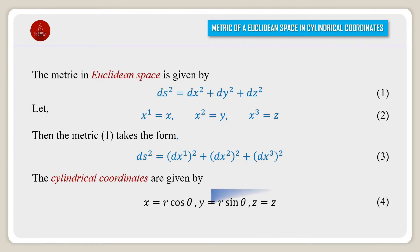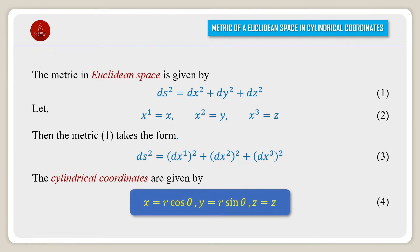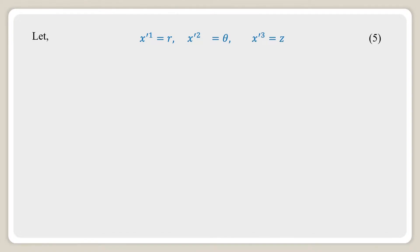The cylindrical coordinates are given by x equal to r cos theta, y equal to r sin theta, and z equal to z. Let x prime 1 equal to r, x prime 2 equal to theta, and x prime 3 equal to z.